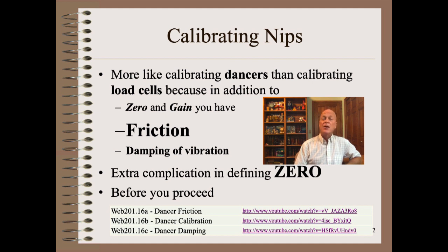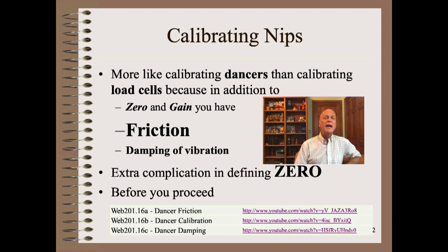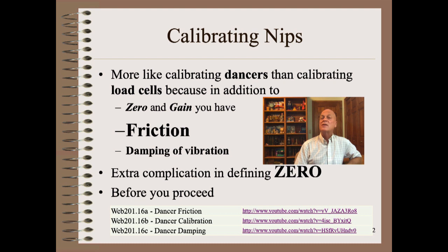This can happen when friction loads are larger than control loads. However, we have additional complication with NIPs that we do not have with dancers — that is, defining zero in web handling. By zero in web handling, I mean what cylinder pressure, for example, puts the least possible force between the roll and roller. So before we proceed, I ask that you review the previous short clips on calibrating dancers, so we do not have to repeat those concepts here.